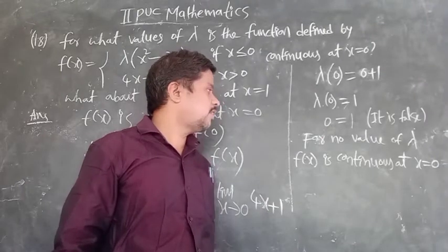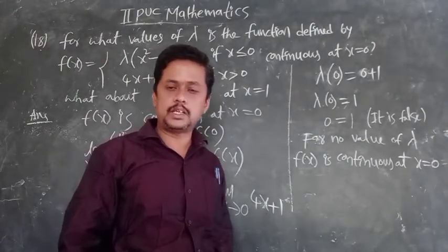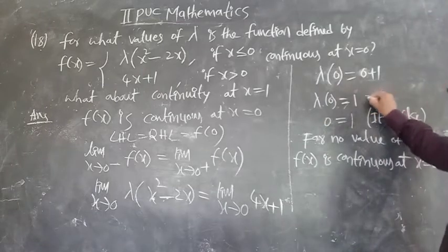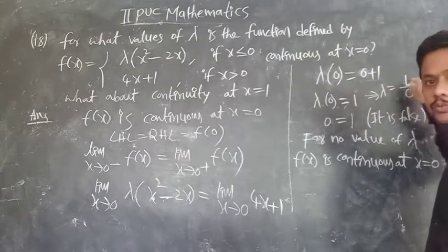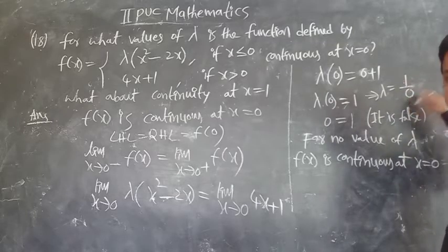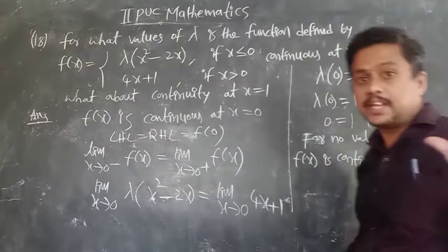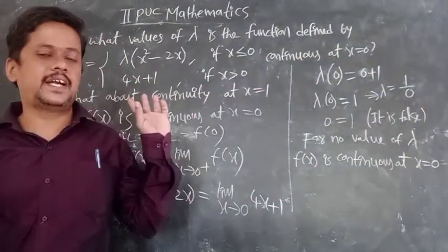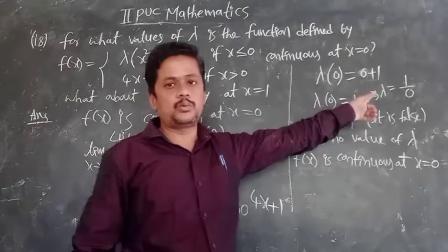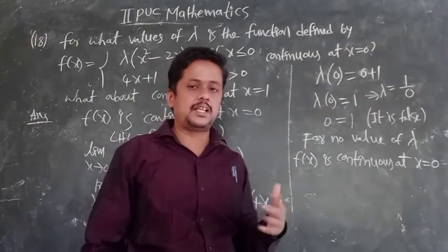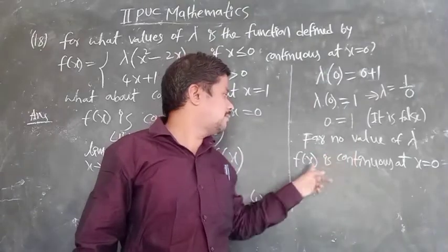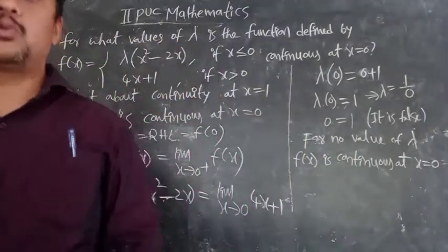So it is false. f(x) is not continuous at x = 0 for any value of lambda because lambda × 0 = 1, which gives 1/0, an infinite value. So for no value of lambda is f(x) continuous at x = 0. This is somewhat difficult to understand but this is the reason we write: for no value of lambda is f(x) continuous at x = 0.